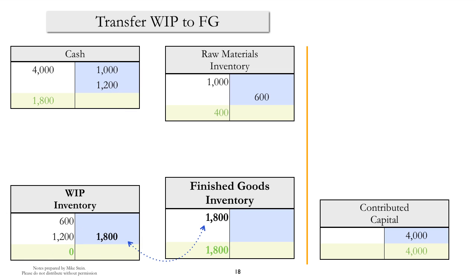If at this point our inventory building process is complete, we transfer the goods from work-in-process inventory to finished goods inventory. That requires a debit to the finished goods account and a credit to the work-in-process account.